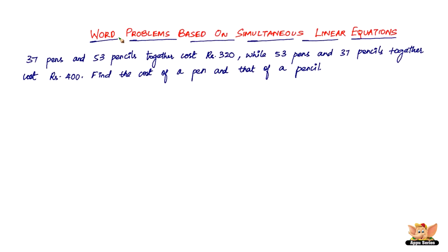In this video, let us solve word problems based on simultaneous linear equations. We need to apply the concepts of simultaneous linear equations to make linear equations in two variables. The problem says: 37 pens and 53 pencils together cost rupees 320, while 53 pens and 37 pencils together cost rupees 400. Find the cost of a pen and a pencil.